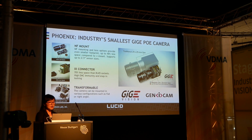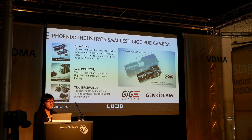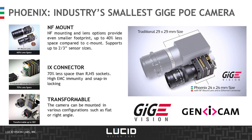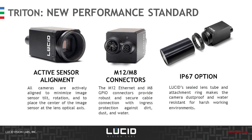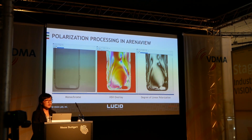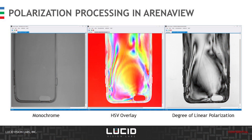Lucid currently offers polarization cameras on the Phoenix product family, which is the smallest GigE PoE camera in the industry. We support NF lens mount for greater space saving on the optics side, and also offer iX connector which is more compact and robust. The camera is transformable into various configurations such as 90 degrees or 180 degrees. Polarization is also offered on the Triton product family, which is a robust IP67 camera with M12 and M8 connectors. Along with the camera, we offer a software SDK called Arena, where you can visualize the regular monochrome image, HSV overlay false color, and the degree of linear polarization image.